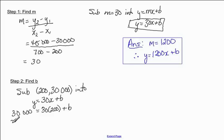So I get 30,000 is equal to 6,000 plus b. I want b by itself, so I'm going to subtract the 6,000 from the 30,000, and I get 24,000. Okay, so now I'm going to sub my b into this equation up here, and I get, so I'll just write that, sub b equaling 24,000 into y is equal to 30x plus b.